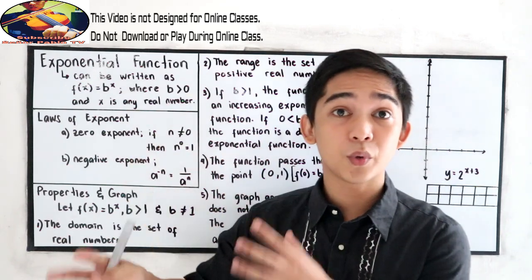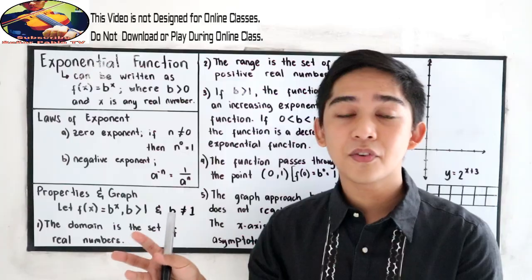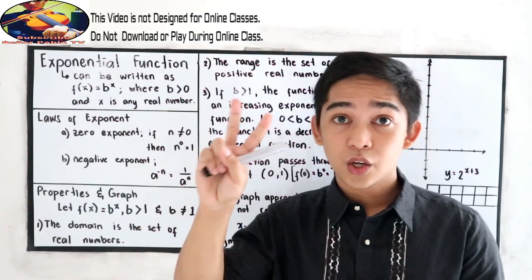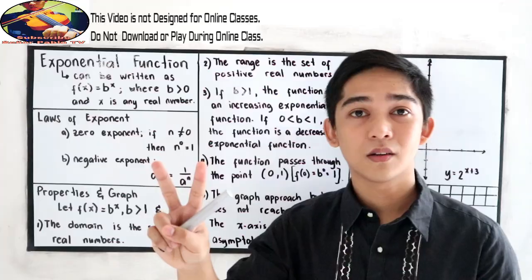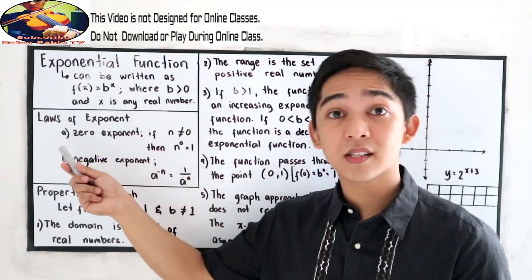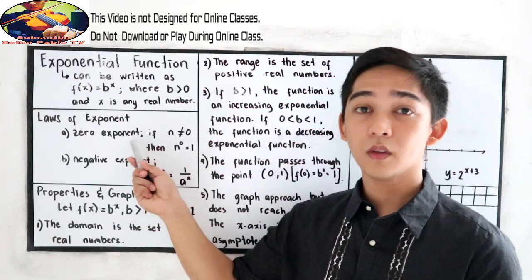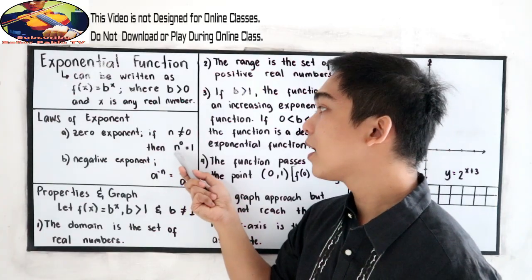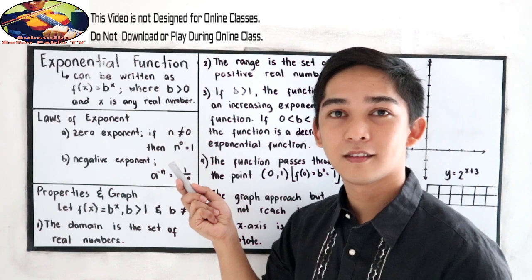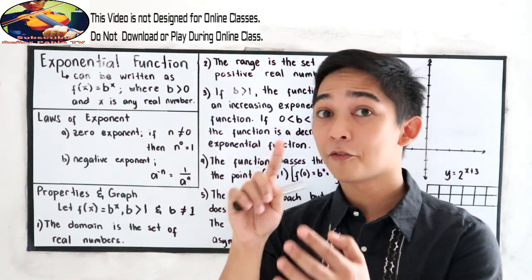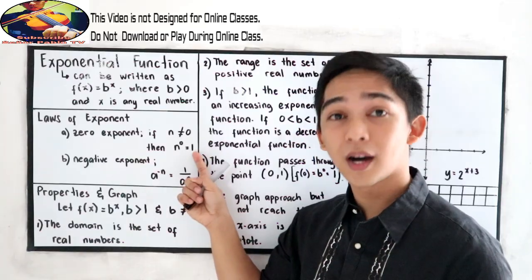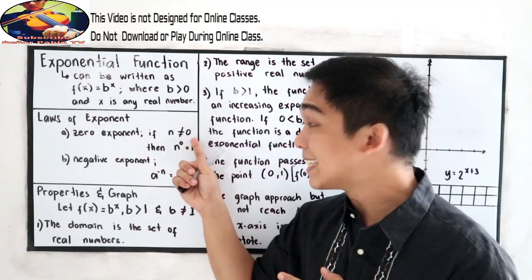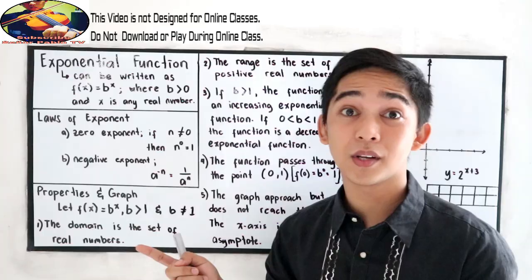Since we are dealing with exponential functions, let's have a short recall about the laws of exponents. In this lesson we will be using two laws. The first one is the zero exponent: if n is not equal to zero, then n raised to zero is equal to one. So five raised to zero is one, ten raised to zero is one — except zero raised to zero, which is undefined.